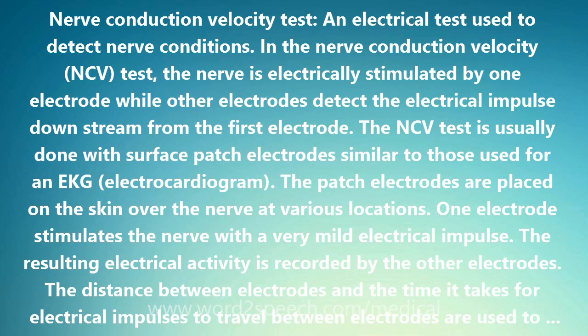The interpretation of an abnormal NCV test depends on why the test was done in the first place. It may indicate damage to a nerve from trauma, polio, diabetic neuropathy nerve damage, a herniated disc, myasthenia gravis, Guillain-Barre syndrome, polyneuropathy — the simultaneous malfunction of many nerves — and many other conditions.